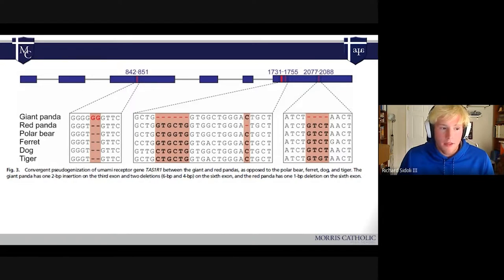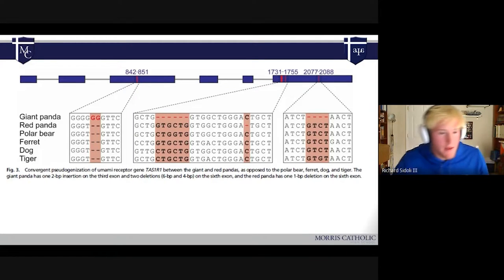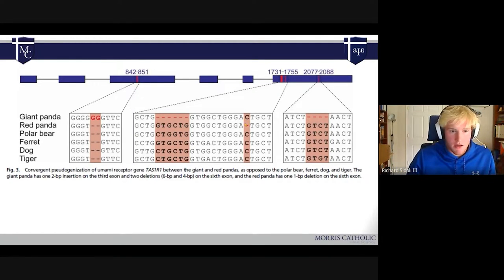In both of them, you can see via different methods, a knockout or pseudogenization, which is pretty much when you lose the function of a gene, it's no longer actually working for them. The deletion here on the sixth chromosome for the red panda means that the gene just doesn't work for them. They don't have any umami taste because they're not tasting anything that has that flavor or taste profile.